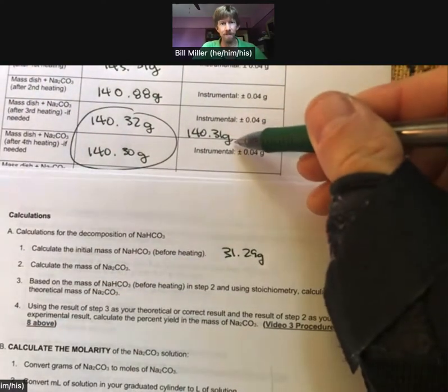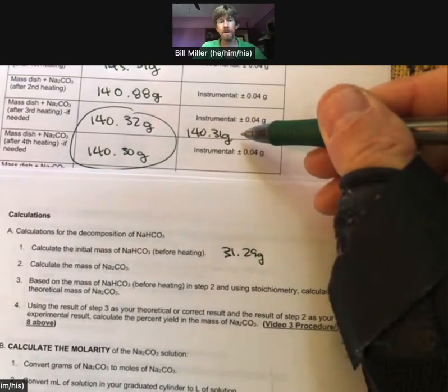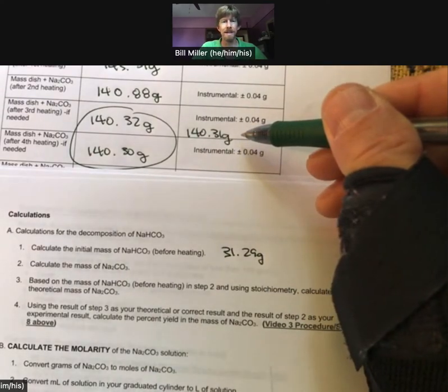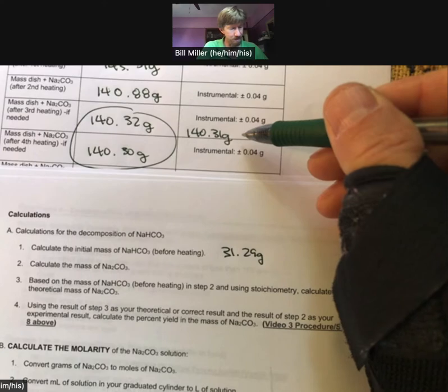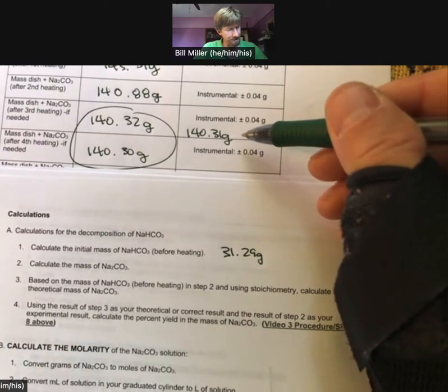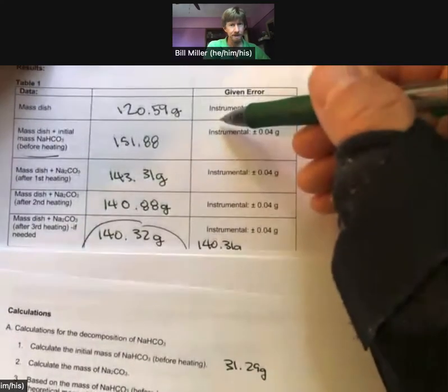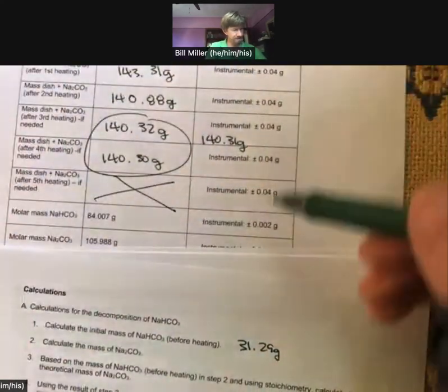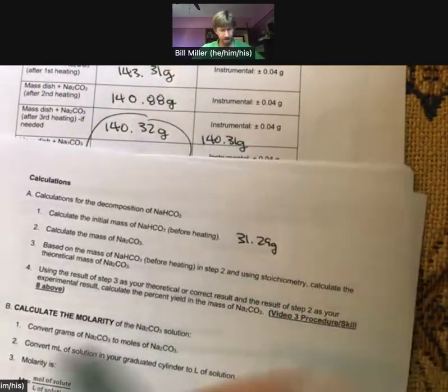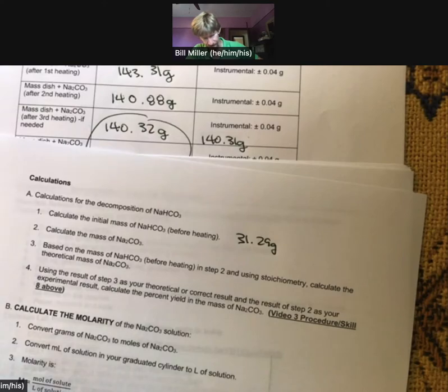Calculate the mass of sodium carbonate. To do that I'm going to take the average of my two final dish plus sodium carbonate measurements and then subtract off my mass of my dish. So 140.31 minus 120.59, I get 19.72.